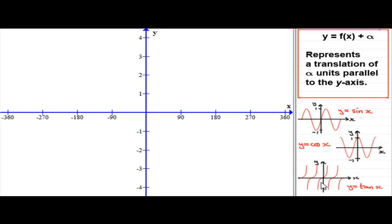What we're going to do in this tutorial is apply the transformation y equals f of x plus alpha to each one of these three graphs. f of x plus alpha, alpha being a positive constant or negative constant, represents a translation of alpha units parallel to the y axis.